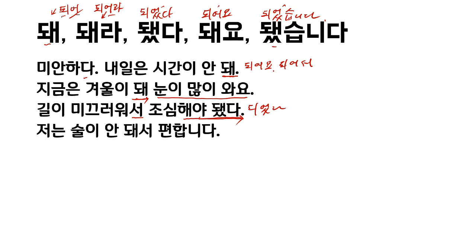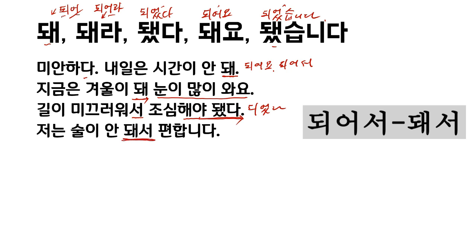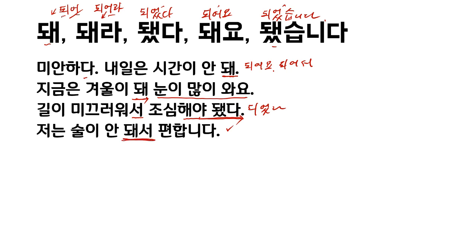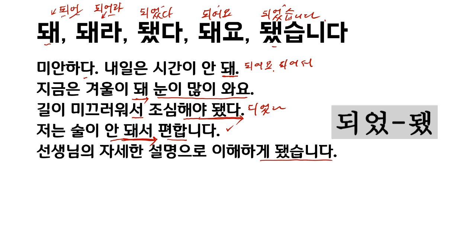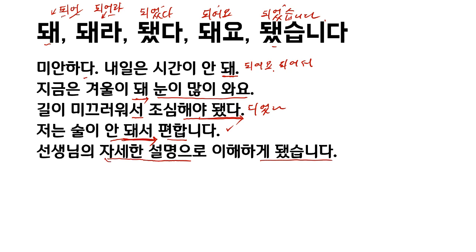저는 술이 안 되었어 — can be shortened as 안 됐어. 편합니다. Because I don't know how to drink alcohol, I am comfortable. 선생님은 자세한 설명으로 이해하게 됐습니다 — 게 되었다, meaning 'be led to.' By the teacher's 자세한 설명, explanation in detail, with that detailed explanation, I was led to understand it.